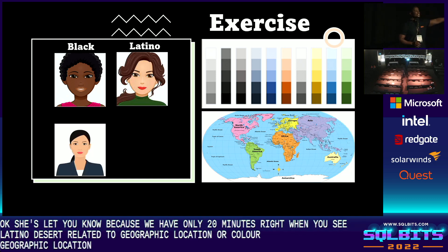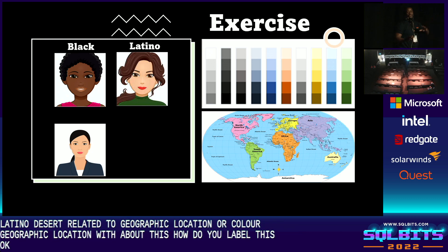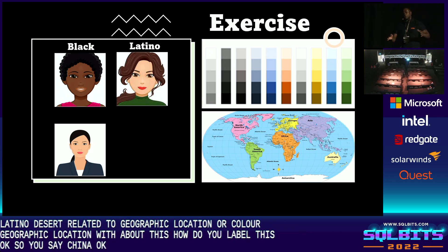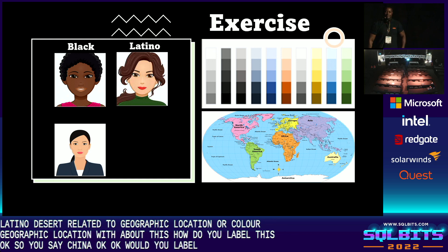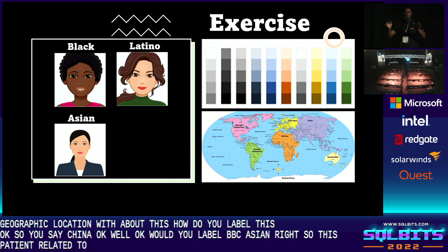How would you label this next one? You said China. How else would you label it? You see Asian, right? So is Asian related to geographic location or color?